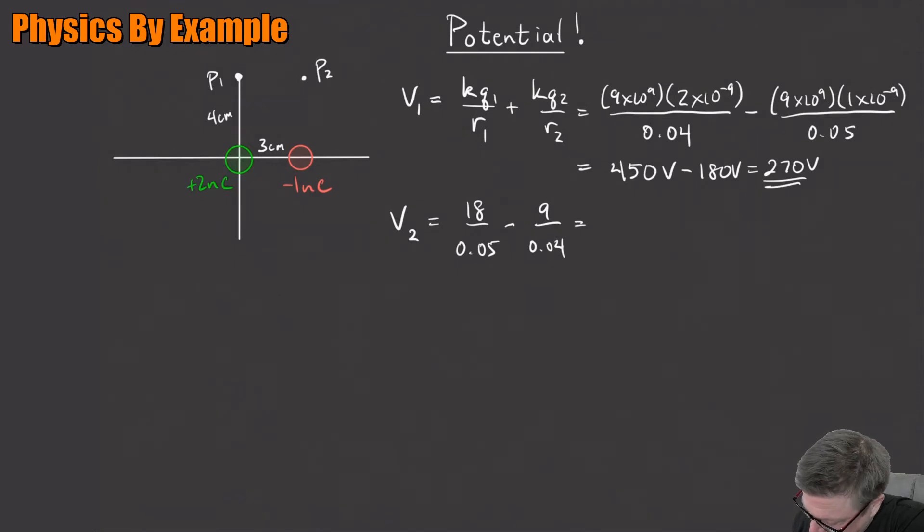So let's see. This is going to be 360 volts minus 225 volts. So what is that? 135 volts.